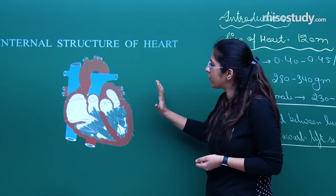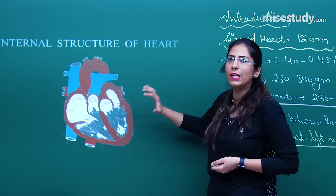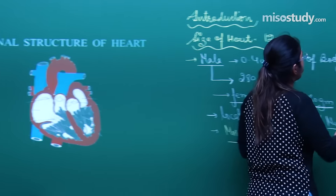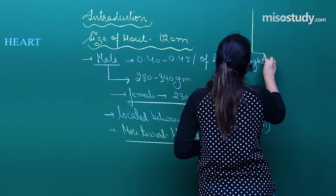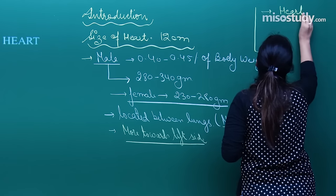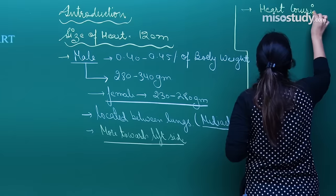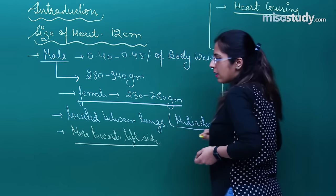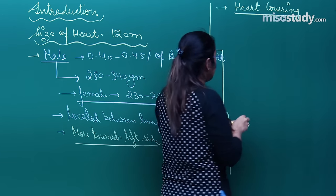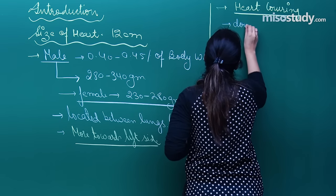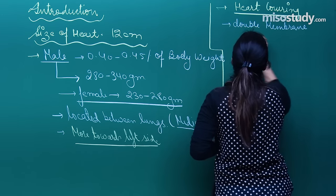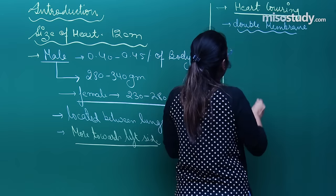When we see the whole structure of the heart, this whole structure is enclosed in a double membrane, and that membrane is called the pericardium. The heart covering is a double membrane structure called the pericardium.